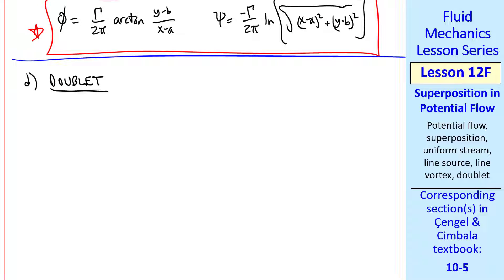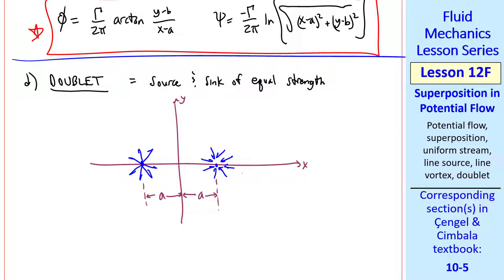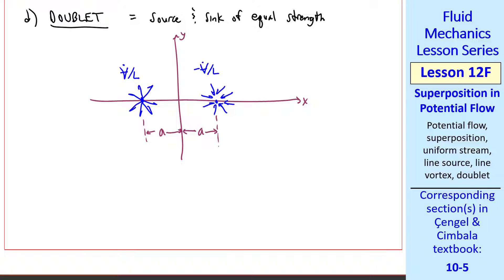Our final building block is called a doublet. This is where we put a source and a sink of equal strength, with the source on the negative x-axis, and the sink on the positive x-axis, both at distance a from the origin. The source strength is v dot over l, and the sink strength is negative v dot over l. To get the doublet, we now let a go to zero, and v dot over l go to infinity, simultaneously, such that the product, a v dot over l, is a constant. This will be the definition of a doublet.